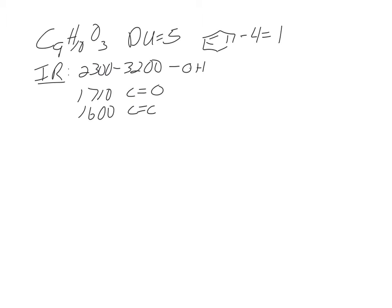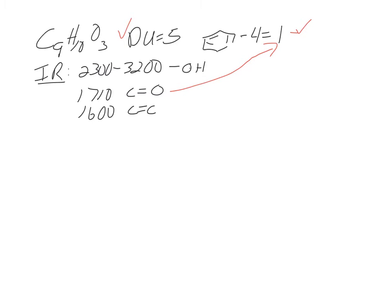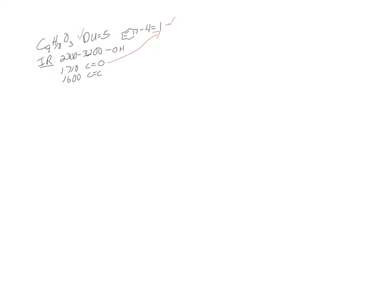So one of our degrees of unsaturation is wrapped up in the C=O pi bond, which covers that last degree. The benzene ring accounts for four, and the C=O pi bond is the other one. All degrees of unsaturation are covered.